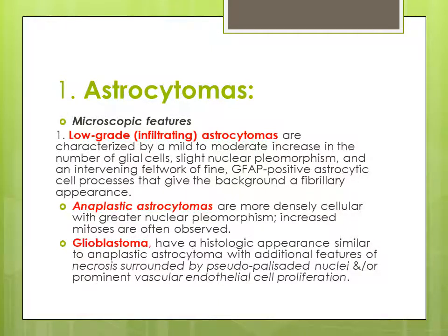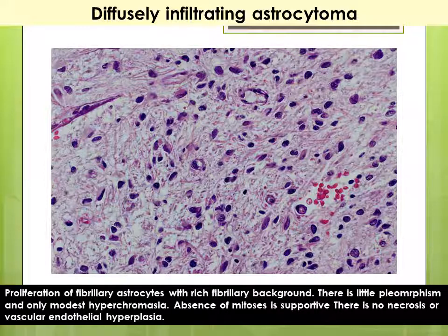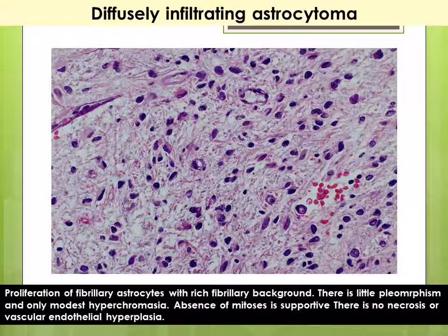In glioblastoma there is necrosis — the turnover of tumor cells becomes more prominent, leading to cell death and necrosis, surrounded by pseudopalisading nuclei, and prominent vascular endothelial proliferation. The microscopic picture shows a fibrillary background with pleomorphic cells of different sizes and shapes, only modest hyperchromasia, and absence of mitosis in lower-grade forms. There is no necrosis and no vascular endothelial hyperplasia in the low-grade infiltrative type.